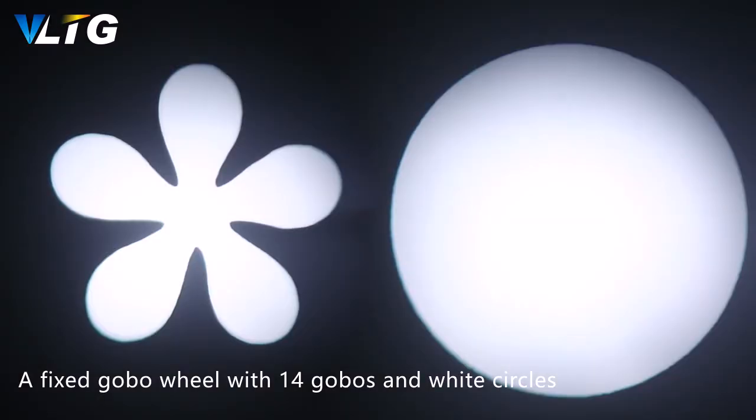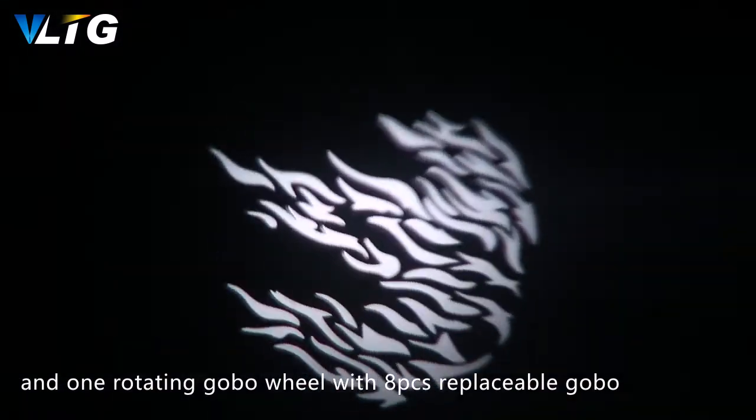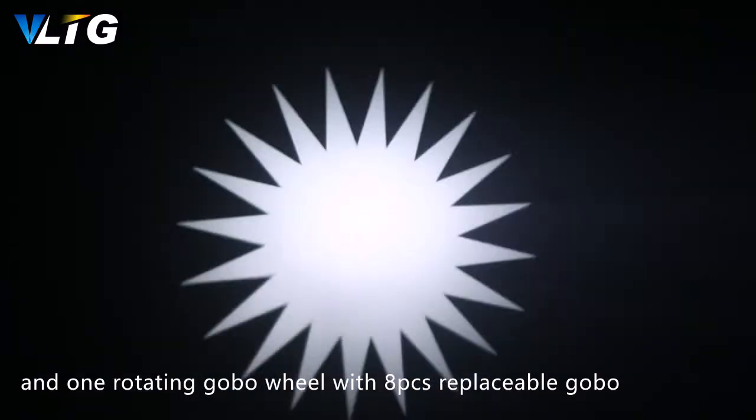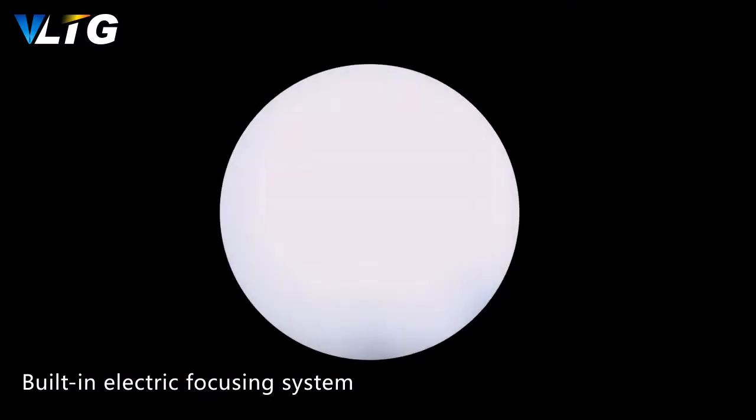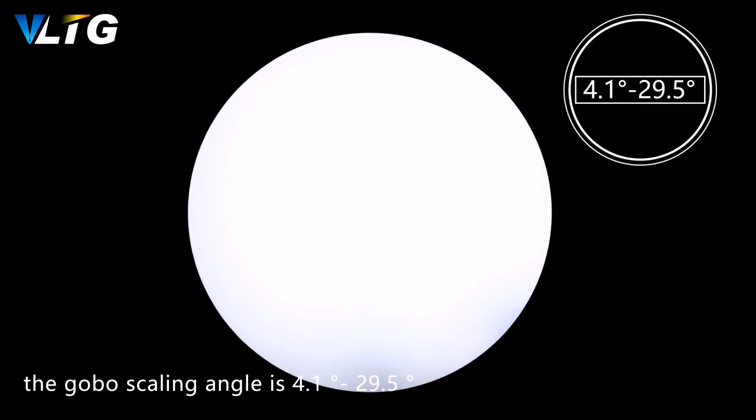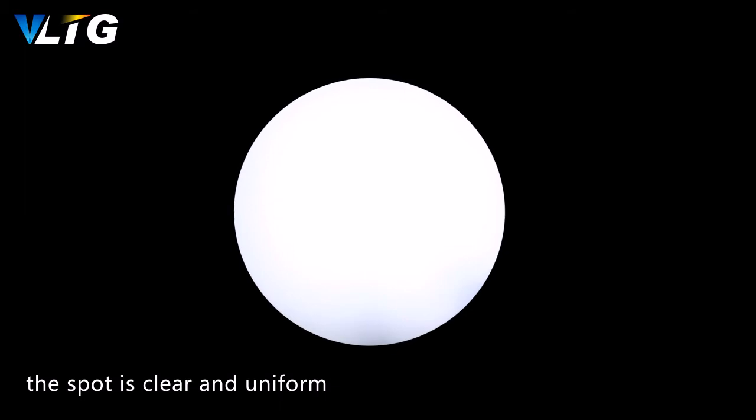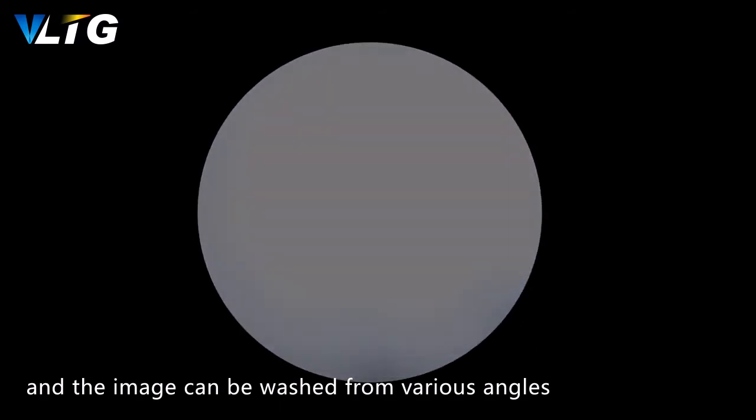A fixed gobo wheel with 14 gobos and white circles and one rotating gobo wheel with eight-piece replaceable gobo. Built-in electric focusing system, the gobo scaling angle is 4.1 degrees to 29.5 degrees. The spot is clear and uniform, and the image can be watched from various angles.